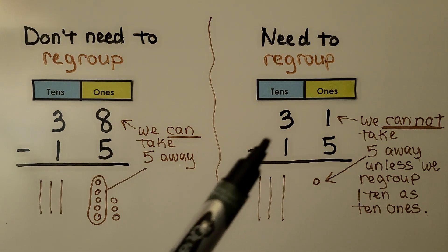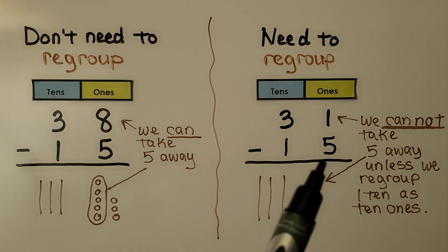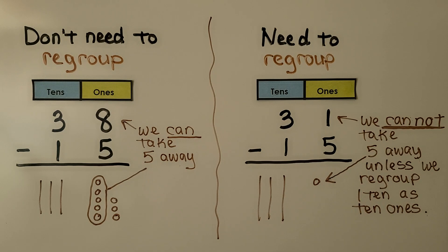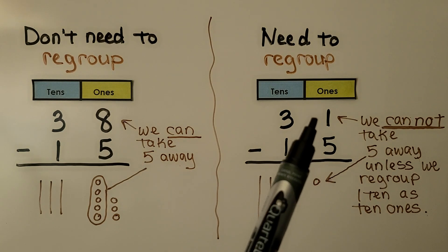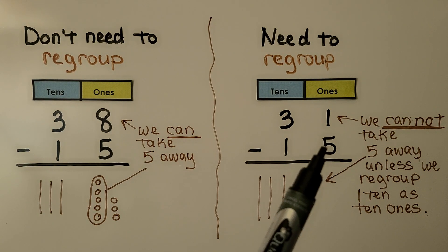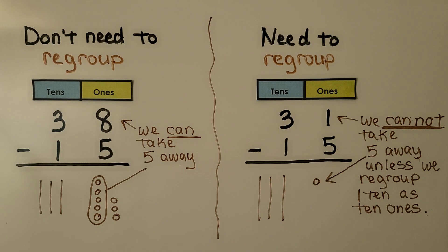Here we have 31 minus 15, and we cannot take five away unless we regroup a ten as ten ones. The way to tell is by looking at the ones place in the minuend to see if it's great enough to take away the ones that are in the subtrahend.